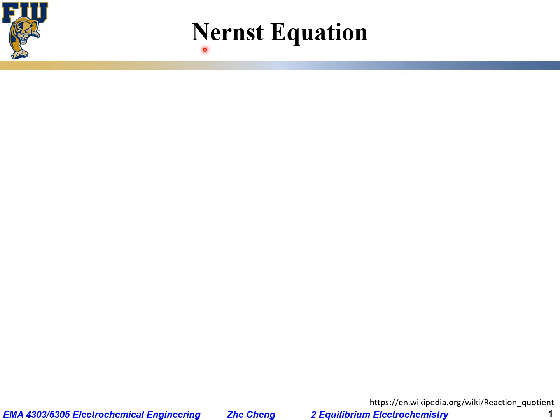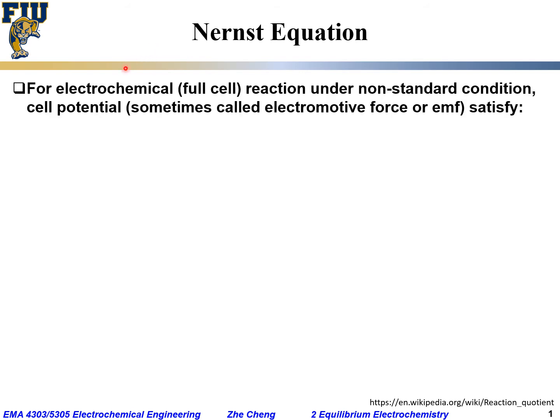Now we are going to talk about the Nernst equation for an electrochemical full cell reaction under non-standard conditions. Remember, standard condition is one atmosphere, typically room temperature 25 degrees C, and the concentration for the species of interest would be standard — typically one molar per kilogram of solvent if it's in solution.